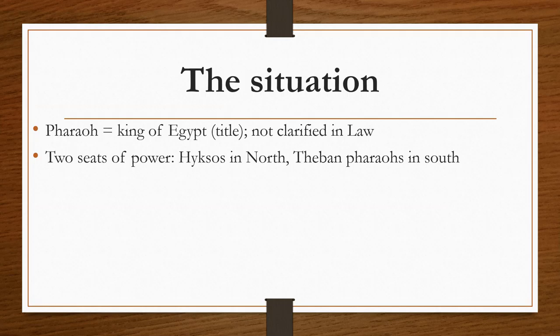The king called the midwives and asked why they let the male children live. The midwives told Pharaoh that Hebrew women are vigorous and give birth before the midwife arrives. This brings up an obvious question: were there only two Hebrew midwives in all of Egypt? That's our first indication we're not talking about the whole land of Egypt. This seems to imply we're talking about the Theban pharaohs in the south, who didn't hold as much land, making it more reasonable that two midwives could cover the area.